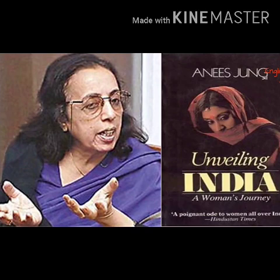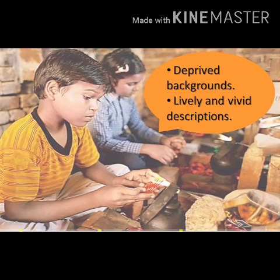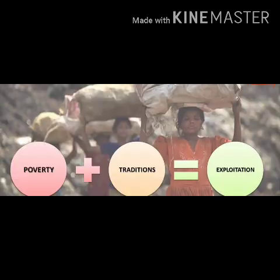Let us have a look at the background of the chapter. Anis Jung analyzes the grinding poverty and traditions which condemn these children to a life of exploitation. This chapter depicts the deplorable condition of poor children. Children must enjoy their days of spring and joy — that is, their childhood days. But there are children who are deprived of all this due to their socio-economic conditions.